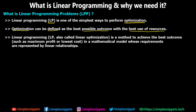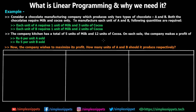Now let's take a real-world scenario — a chocolate factory — and understand how linear programming will help us. Consider a chocolate manufacturing company that produces only two types of chocolates: chocolate A and chocolate B. Both require milk and cocoa as raw materials. To manufacture each unit of A and B: chocolate A requires one unit of milk and three units of cocoa; chocolate B requires one unit of milk and two units of cocoa. The company kitchen has a limit — only five units of milk and twelve units of cocoa available.